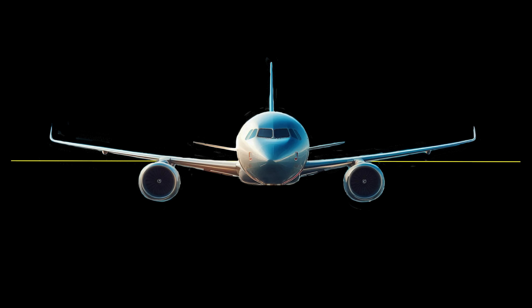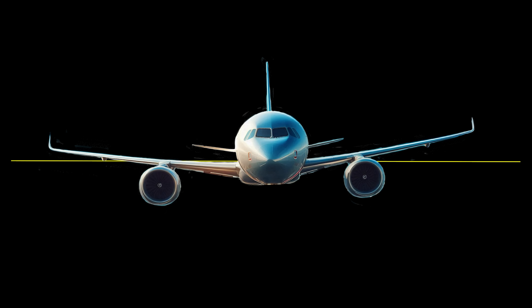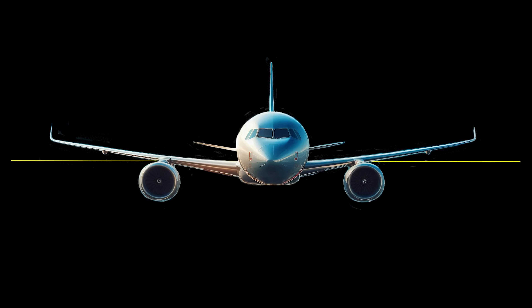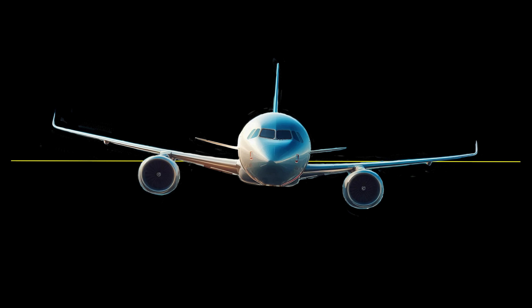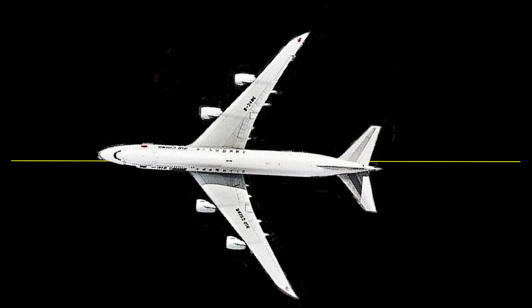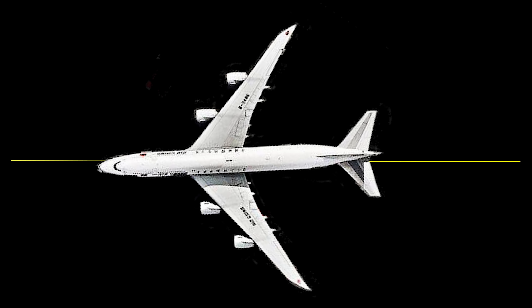You also then have roll and yaw. Roll being the angle relative to the horizontal running across the width of the aircraft, and yaw being the horizontal pivot of the aircraft.